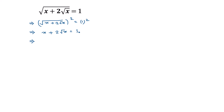Taking this x to the right side, we will have 2 times square root of x is equal to 1 minus x. Taking a square to both sides again, 2 times square root of x, whole square, is equal to 1 minus x, whole square. This gives 4 times x on the left side, since the square root and square cancel.